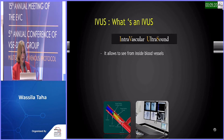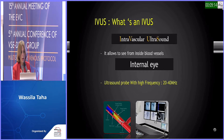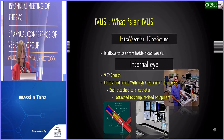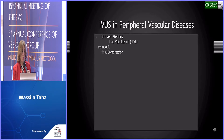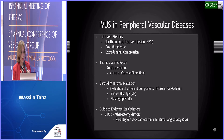IVUS is the intravascular ultrasound. It allows us to see from inside the blood vessels — it is the internal eye for vascular surgeons. The probe is of high frequency, between 20 and 40 megahertz. The catheter is attached to the probe and to a computerized equipment. There are many indications for IVUS in peripheral vascular disease, but here we focus on its crucial role in iliac vein stenting.